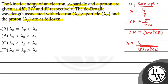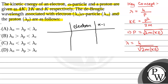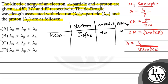We will compare the mass, charge and kinetic energy of the three particles — electron, alpha particle and proton. If mass of a proton is m, then mass of the alpha particle is 4m, and the relative mass of electron with respect to proton is m by 1840.